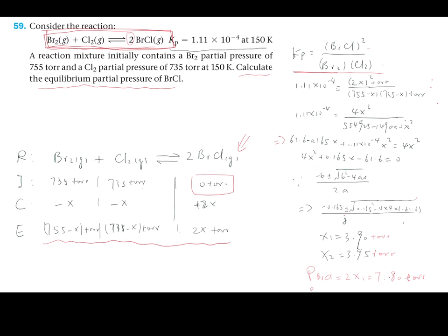The way to solve this is to plug this back to the equilibrium constant expression, which is here. For this reaction, we have bromine monochloride raised to the power of two because of the coefficient two, over bromine times chlorine.